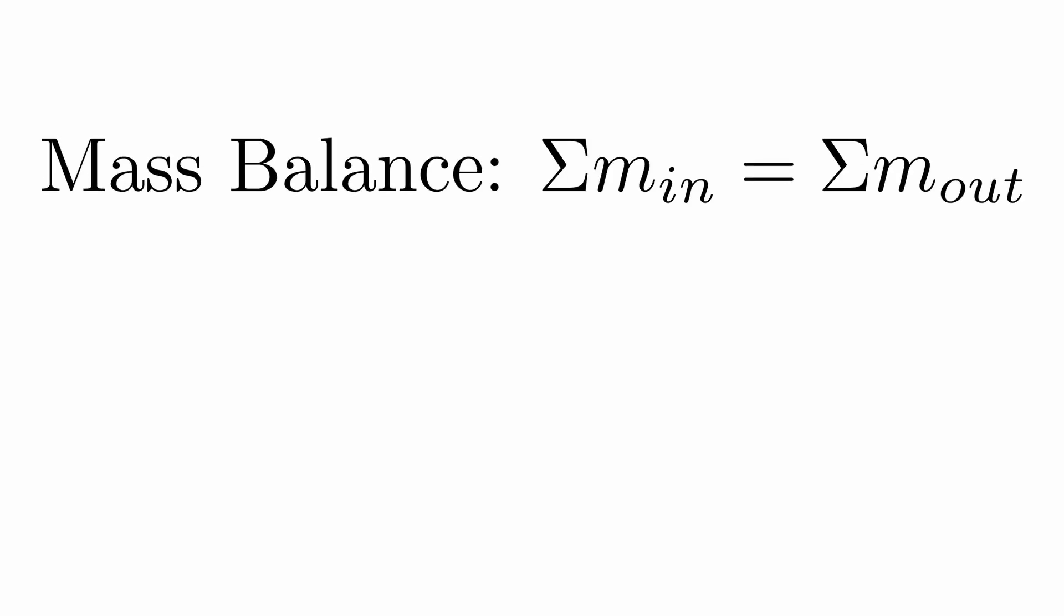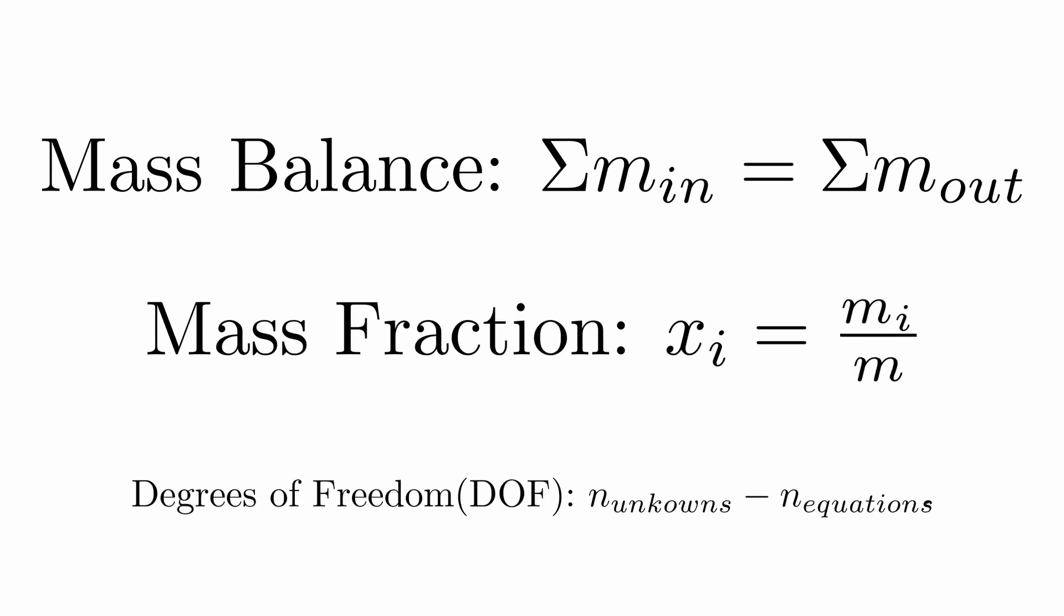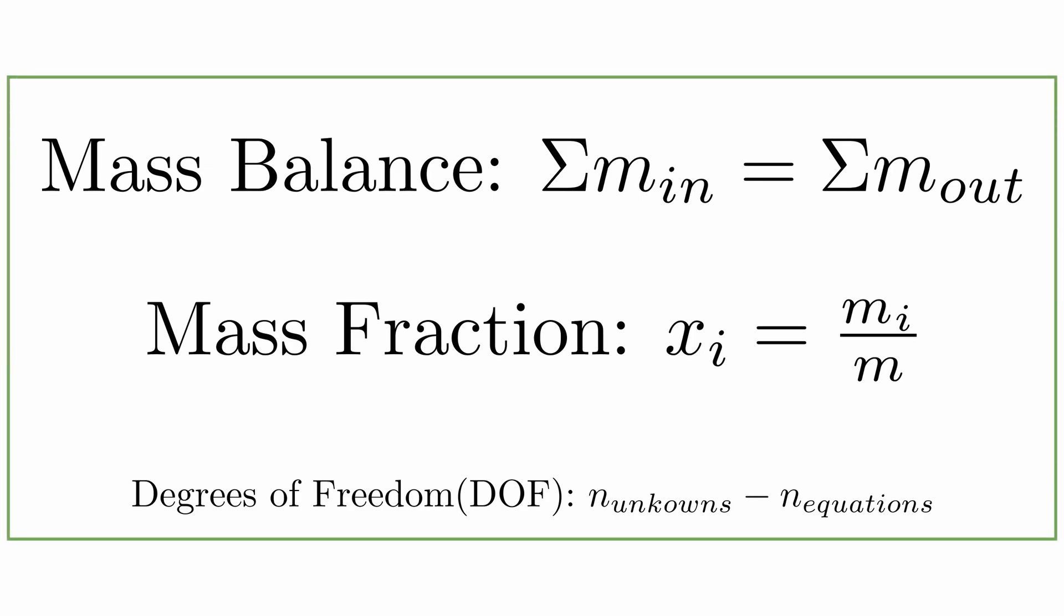Next let's talk about our equations. As always, the equation for mass balance, when in doubt, in equals out. Also we'll need mass fraction, denoted by x, and we'll have degrees of freedom, which is the number of unknowns minus the number of independent equations.